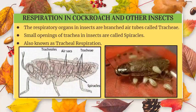Insects such as cockroach and grasshopper have a tracheal system running all around their body. The air tubes called trachea open through small openings called spiracles for exchange of gases. Insects lead a very active life, thus they need more amount of oxygen. This is called tracheal respiration.